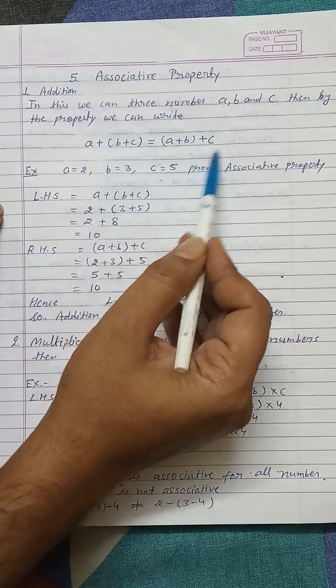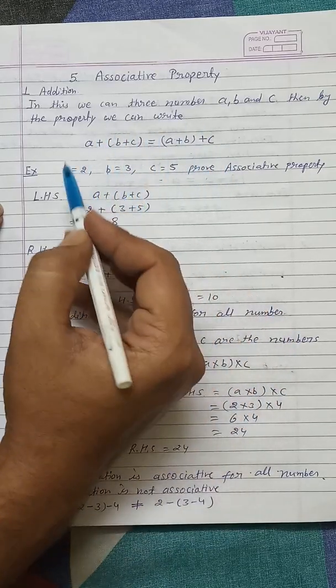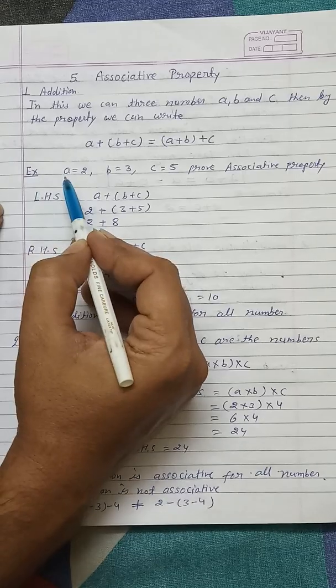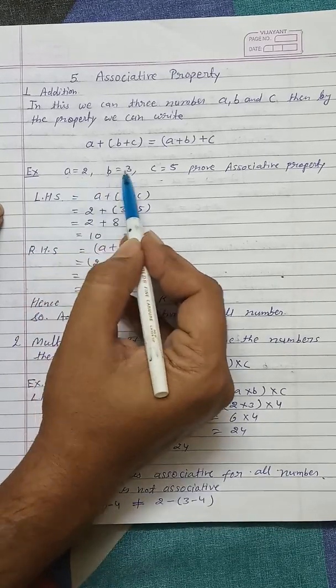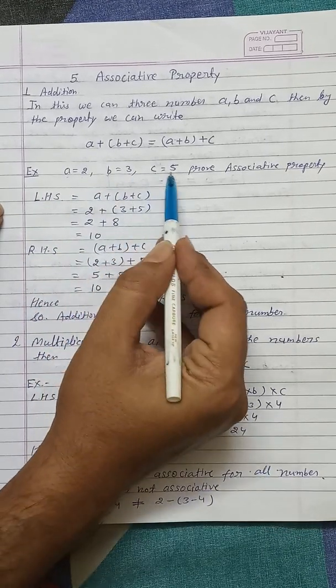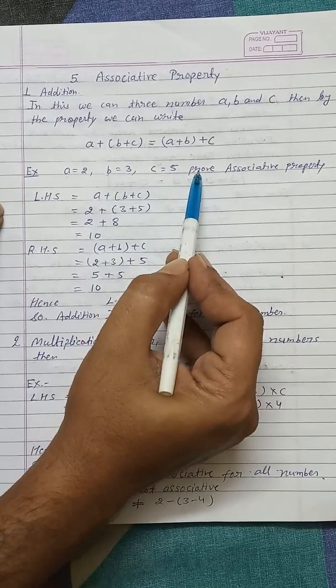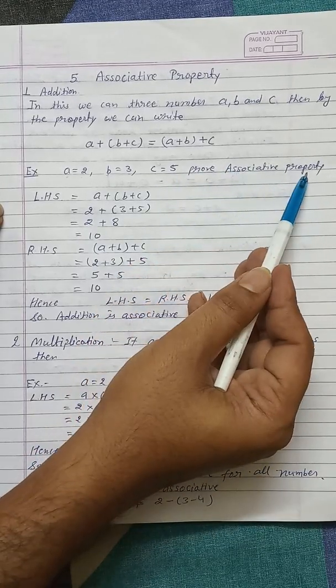Now we explain this property by taking an example. For example, take A equals 2, B equals 3 and C equals 5. Proof associative property.